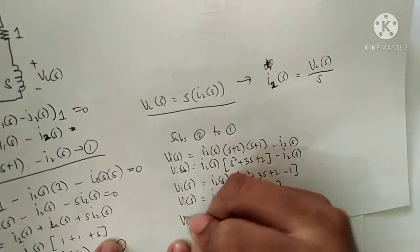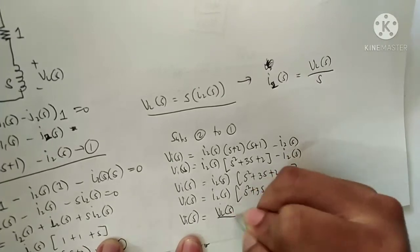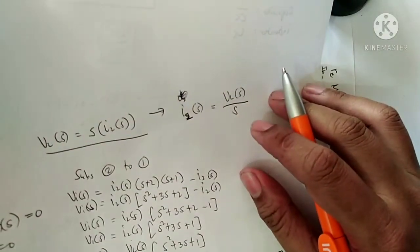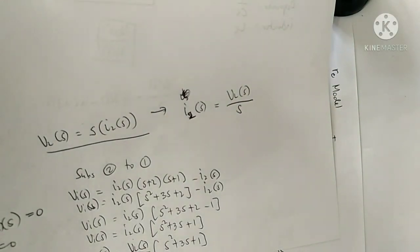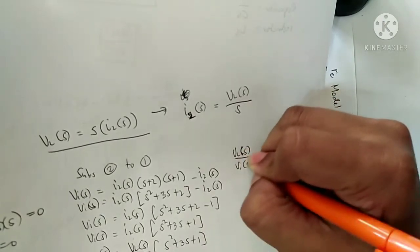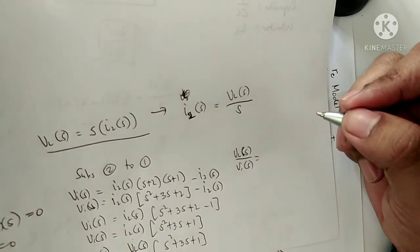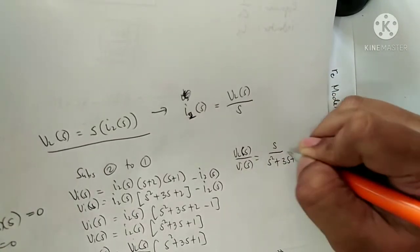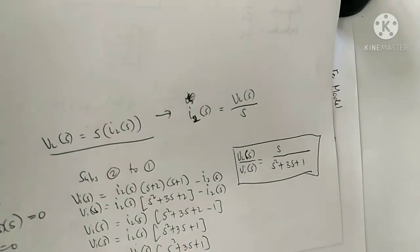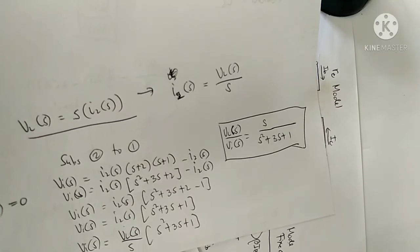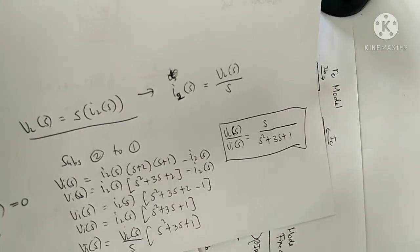Therefore Vi(S) equals VL(S) times (S² + 3S + 1) over S. Dividing both sides: VL(S)/Vi(S) = S over (S² + 3S + 1). You now have the transfer function. Check your module — this problem is your assignment on electrical network transfer functions.